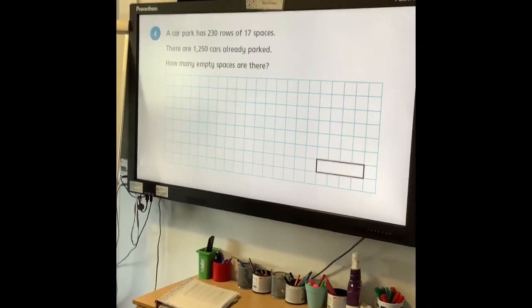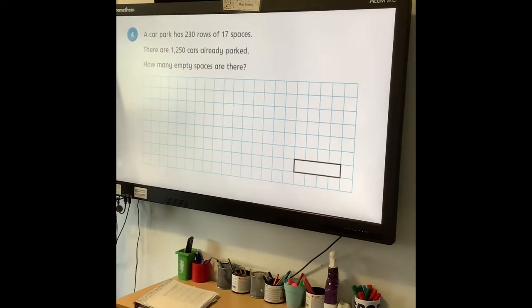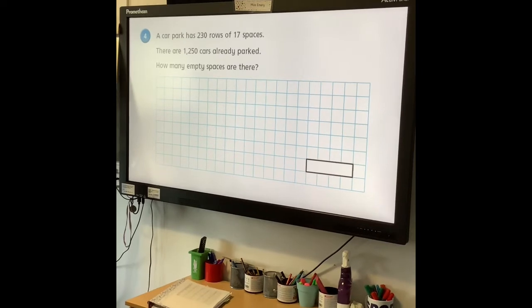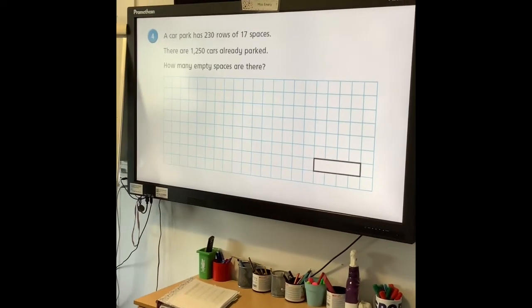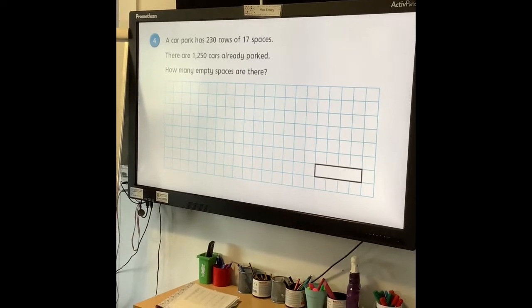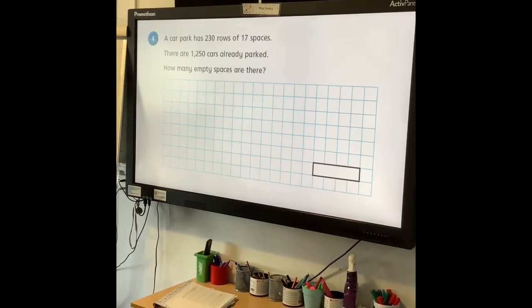So, problem number 1. A car park has 230 rows of 17 spaces. There are 1,250 cars already parked. How many empty spaces are there? Obviously, you've got to think about this. It's not going to be a one-step problem, so read it through very carefully, thinking about what you need to work out.